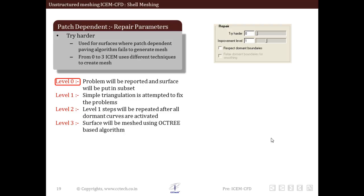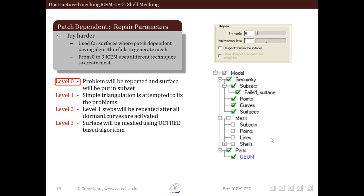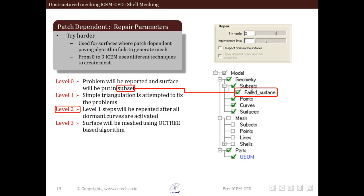At level 0, without trying any further to mesh the surface, the problem will be reported and the surface will be put in a subset as a failed surface. At level 1, if the mesher fails, simple triangulation is attempted to fix the problem; this is applicable only for all-tri and chord dominant mesh types. At level 2, failure of meshing algorithms may be due to merging of surfaces while using the make dormant option; this level will try again after making dormant curves active. At level 3, if everything else fails, the surface will be meshed by using the octree mesher, which is one of the most robust meshers available in ICM.